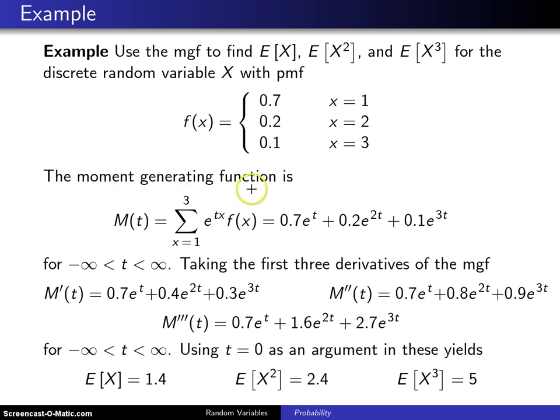The moment generating function is the expected value of e^(tx). Notice that's a lowercase t and an uppercase X. Since you have a discrete distribution, you will take the summation over the support of e^(tx) multiplied by the probability mass function f(x).